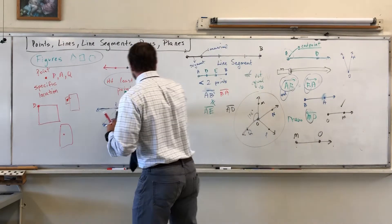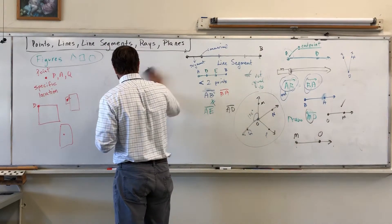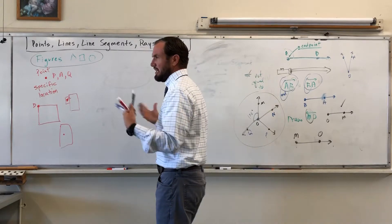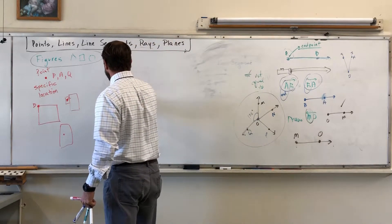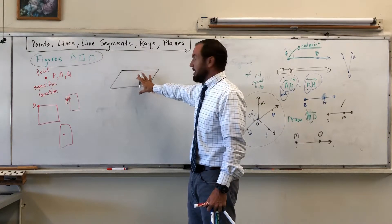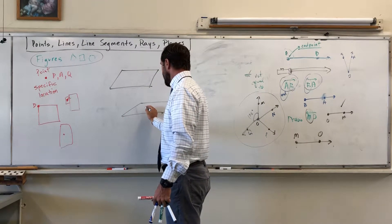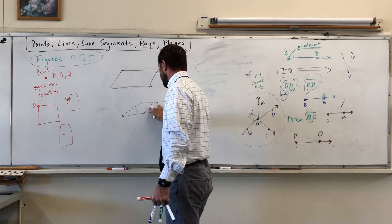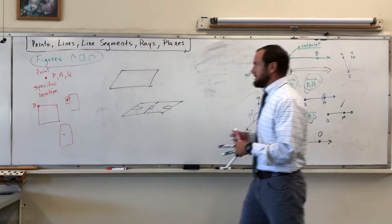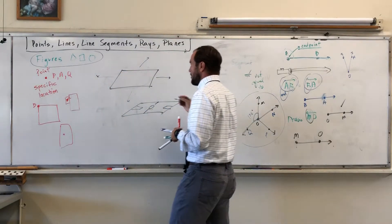These are all generally two-dimensional figures. The last one we want to talk about is a plane. A plane is a flat surface — I drew it at an angle so you can see the three-dimensional perspective. I'll make it look like a basketball court. It's a flat surface that extends in all directions. That's a plane.